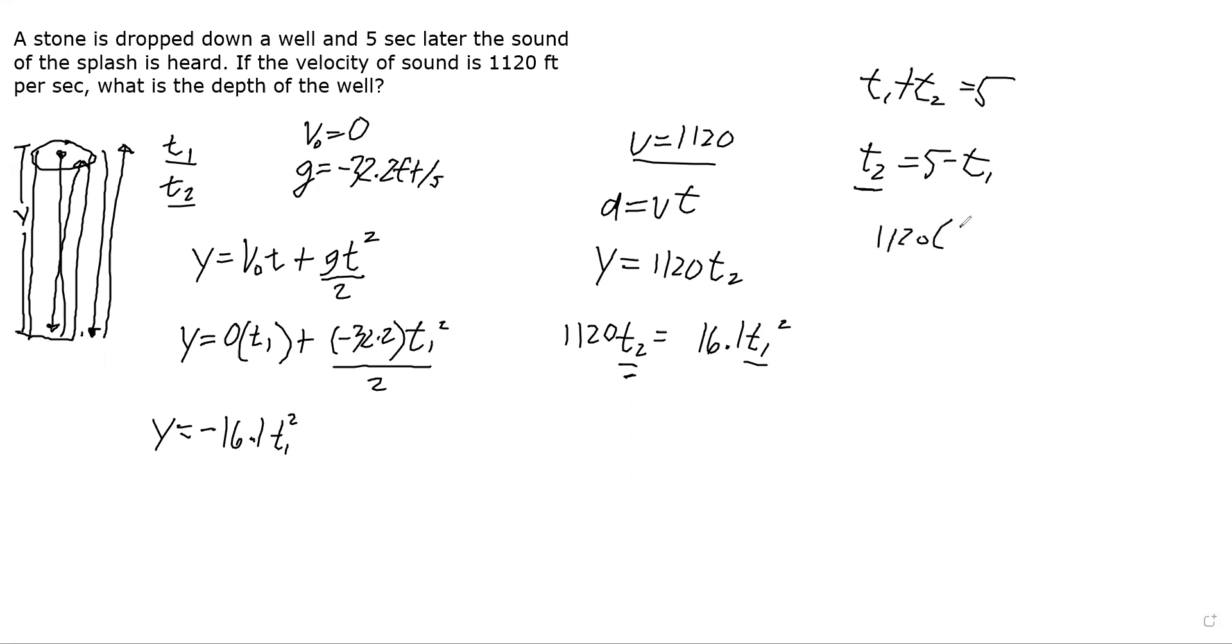So we get 1120 times (5 minus t₁) equals 16.1 t₁ squared. Let's simplify - we can use the calculator. 1120 times 5 minus x equals 16.1 x squared, solve for x. So t₁ equals 4.68454.